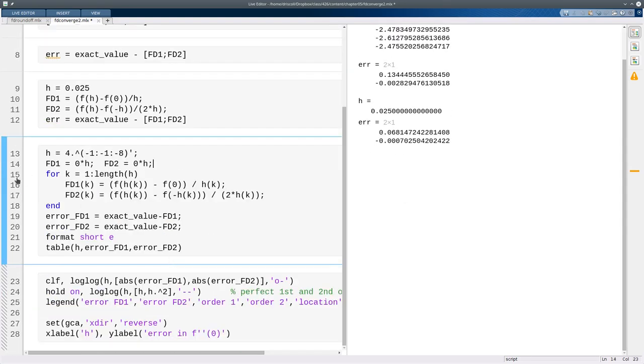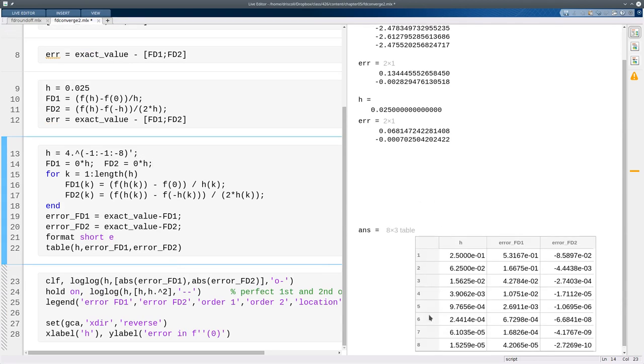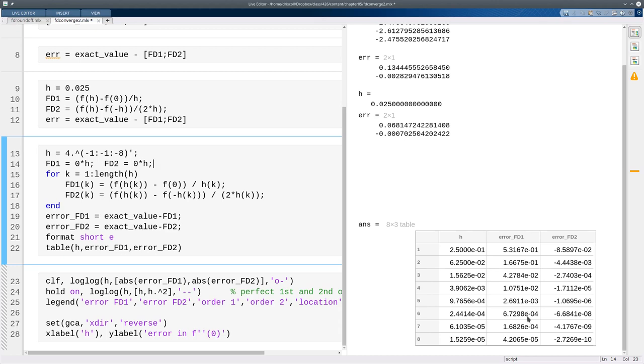Here's a bit more systematic experiment, so I do it for a bunch of different values of h. If you look, roughly speaking, the second order error is about the square of the first order error as we expect.